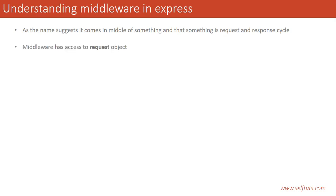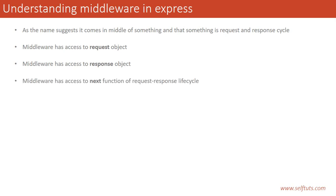Now, middleware has access to the request object. You need to keep in mind that middleware has access to the request object of Express, and also to the response object. So both request and response objects can be accessed by middleware. Middleware also has access to the next function in the request and response cycle, which we will see in detail in subsequent slides.